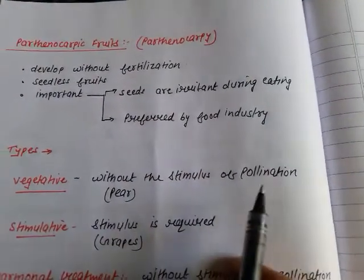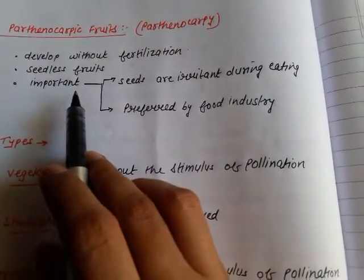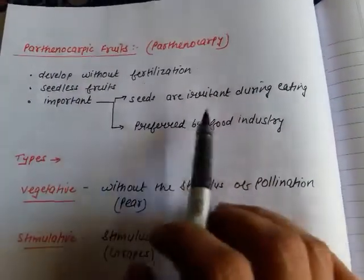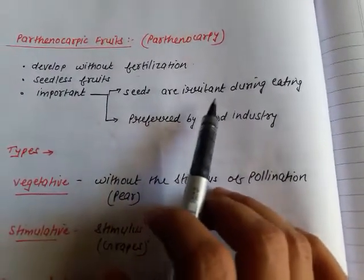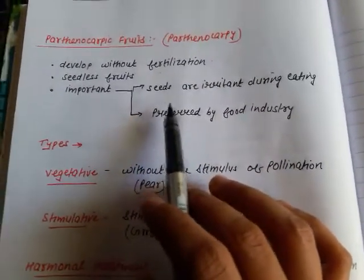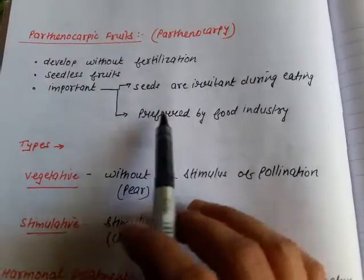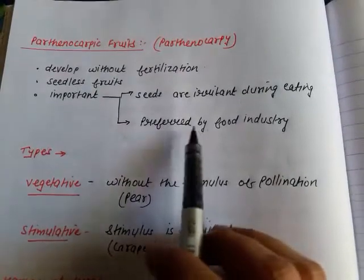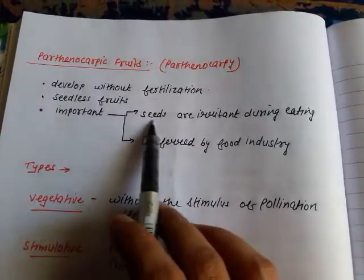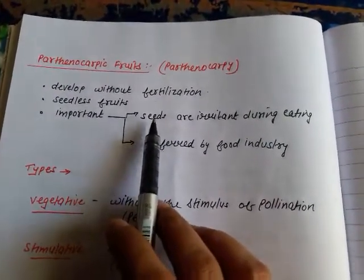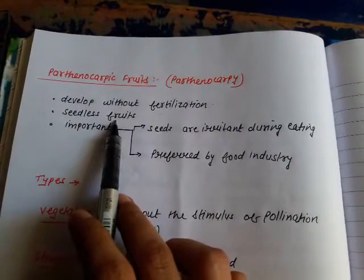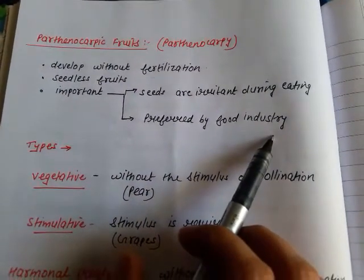Now, what is the importance of parthenocarpy? The mechanism of obtaining parthenocarpic fruits is becoming very important. Firstly, seeds are irritants during eating of fruits — when seeds come into the mouth, we remove and throw them away. The second reason is that seedless fruits are preferred by food industries, because processing fruits requires the removal of seeds, which is quite difficult for the industries. Therefore, these seedless fruits are preferred by food industries.